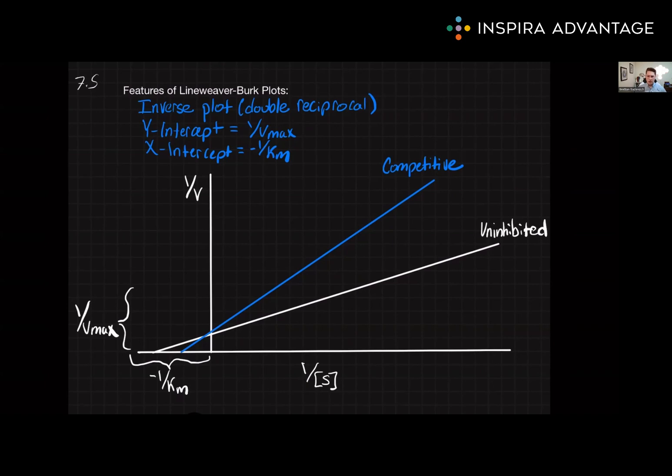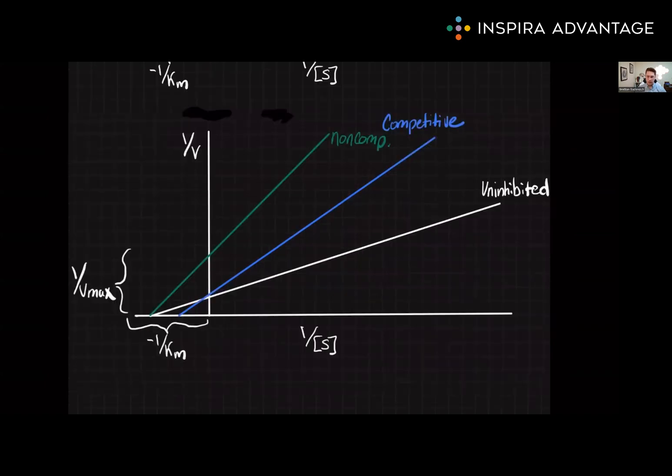Based on that, pause the video and predict how the Lineweaver-Burk plot for a non-competitive inhibitor will look. So non-competitive inhibition causes Vmax to decrease and Km to be unchanged. Since Km is unchanged, the x-intercept will be the same for the uninhibited enzyme.